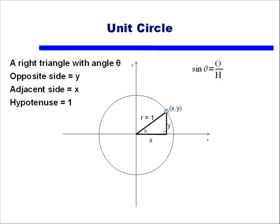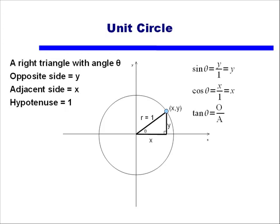Once I have my sides in terms of opposite, adjacent, and hypotenuse, I should immediately think of my trig functions. Sine of theta is opposite over hypotenuse. With this example, the opposite side is y and the hypotenuse is 1, so sine of theta equals y over 1, or simply y. Cosine is adjacent over hypotenuse; the adjacent side is x and hypotenuse is 1, so cosine of theta equals x. Tangent of theta is opposite over adjacent, or y over x.